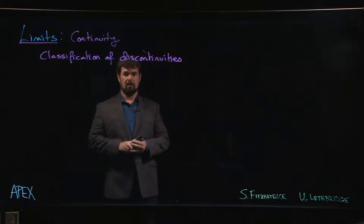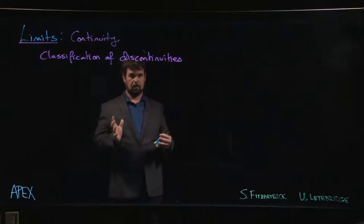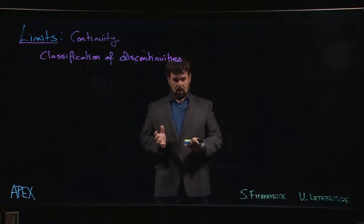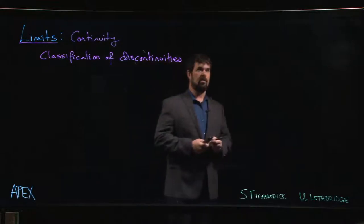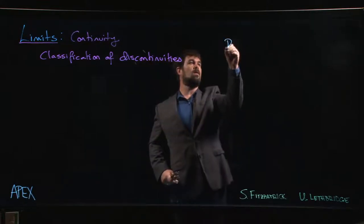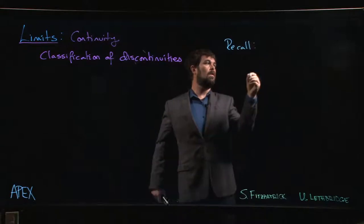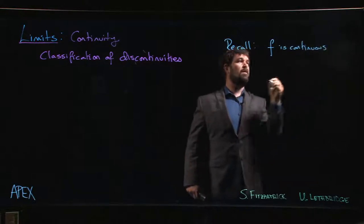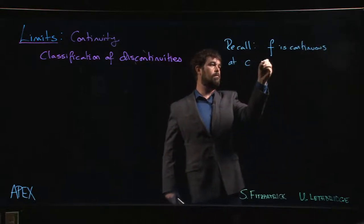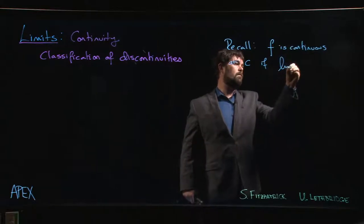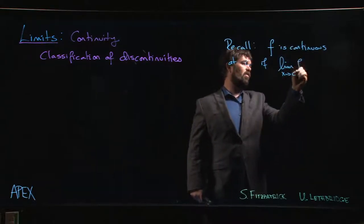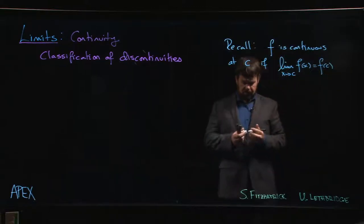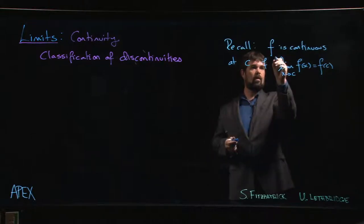In the last few videos we've looked at some examples of functions that were continuous, mostly on their domains. We wrote down intervals where they were continuous and saw what it means to be continuous. As a reminder, a function f is continuous at some point C if the limit as X approaches C exists and is equal to the value of the function at that point. This is our definition for continuity at a point.